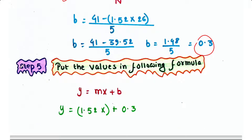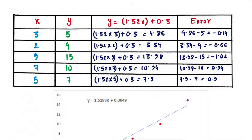Step 5 is to put the values into the straight line formula: y = mx + b. Now we know the values of m and b, so the equation becomes y = 1.52x + 0.3. For each x, that means for each independent variable, we can calculate y, the dependent variable.